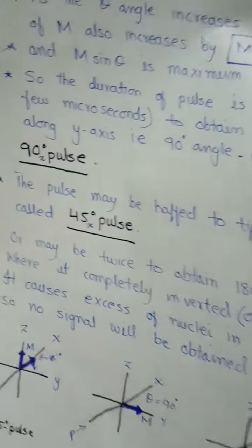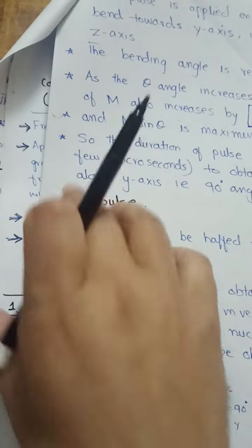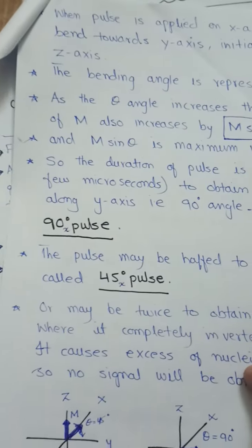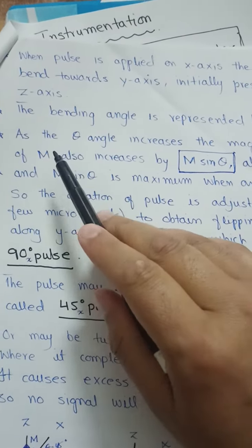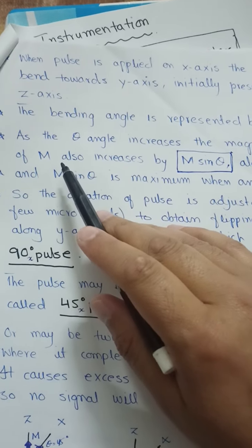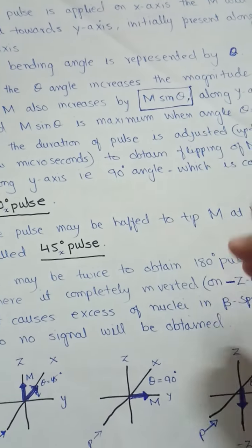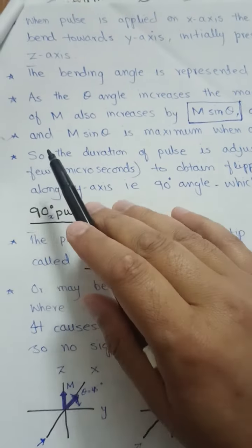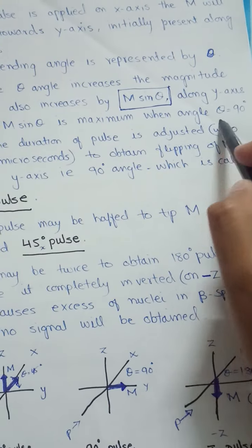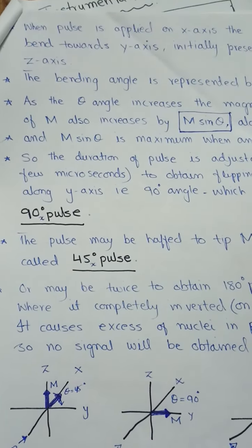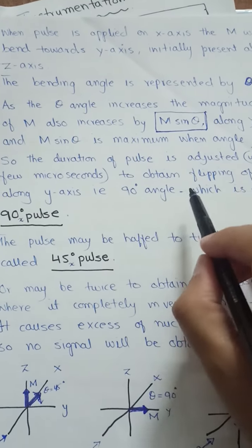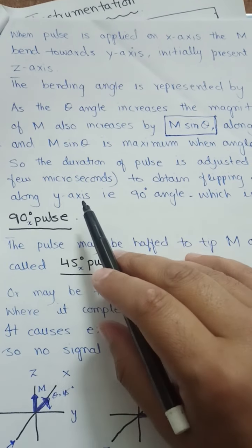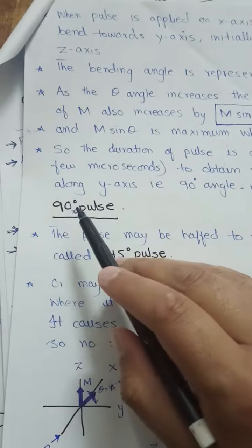When the pulse is applied, the bending angle of the magnetization vector is represented by theta. As the angle increases, the magnitude of the magnetization vector also increases by M·sin(θ) along the y-axis. M·sin(θ) is maximum when theta equals 90 degrees, since sin(90°) is maximum. The duration of the pulse is adjusted to a few microseconds to obtain the flipping of the magnetization vector to the y-axis at 90 degrees, which is called the 90° x-pulse.